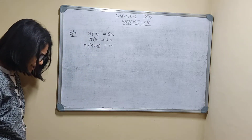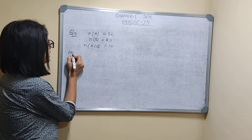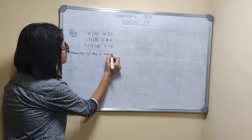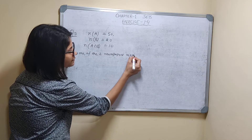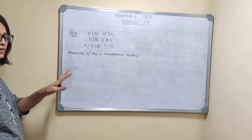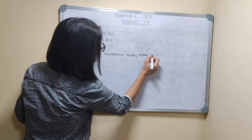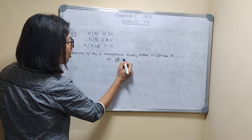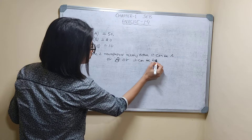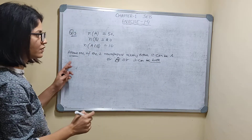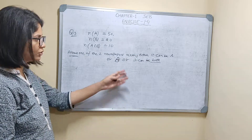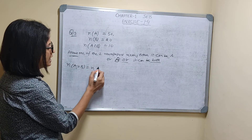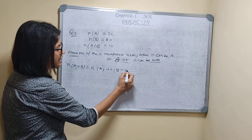They are asking how many people read at least one of the two newspapers. At least one of the two newspapers means either it can be newspaper A, or it can be newspaper B, or it can be both. So you have to find n(A ∪ B), which equals n(A) plus n(B) minus n(A ∩ B).